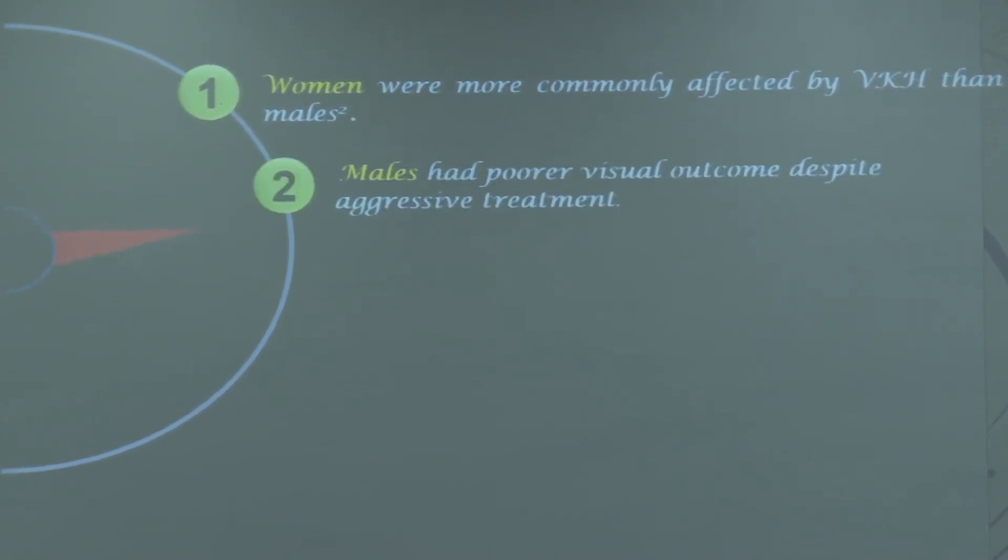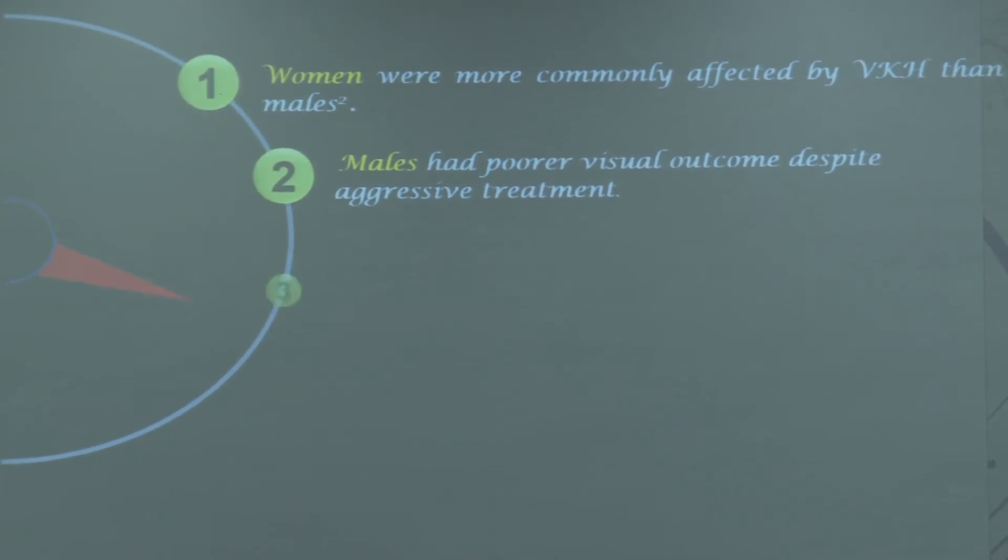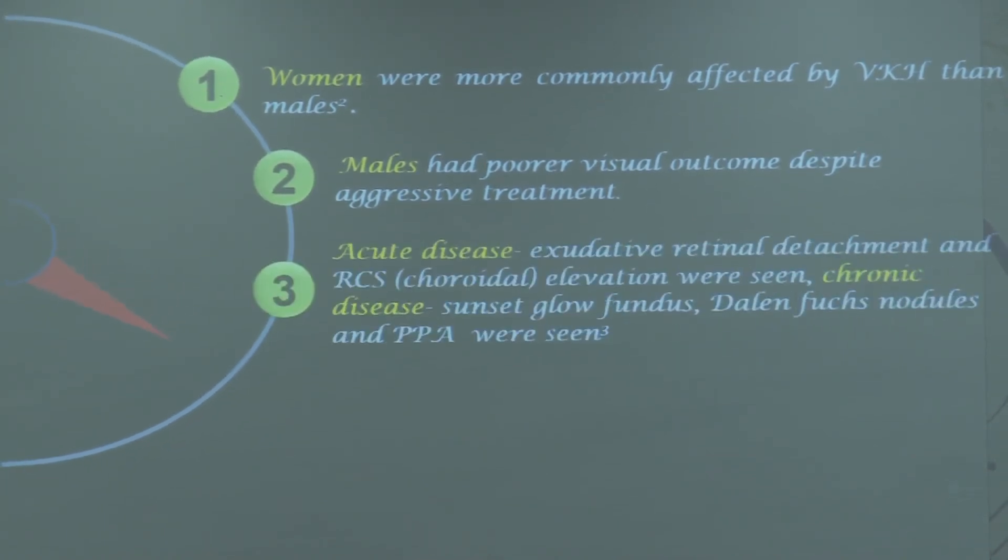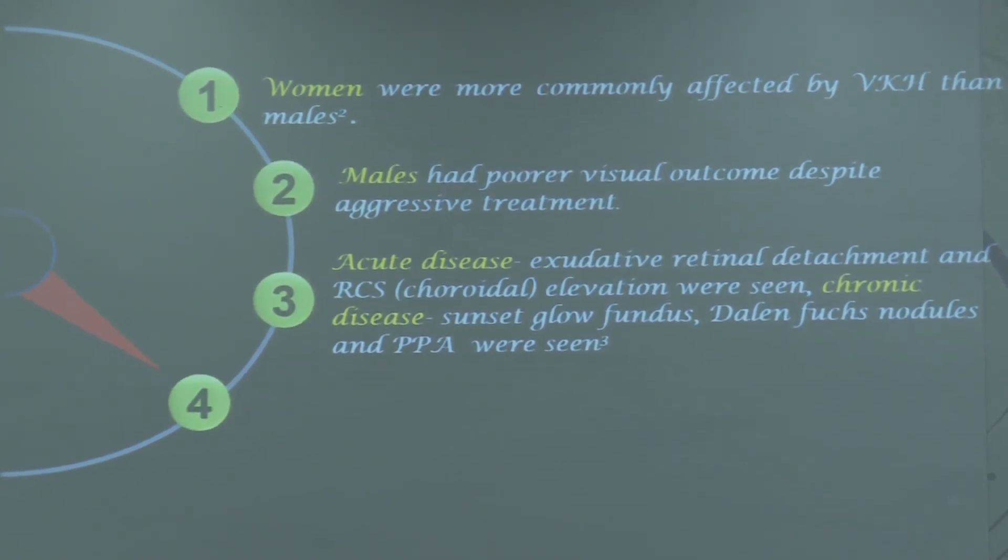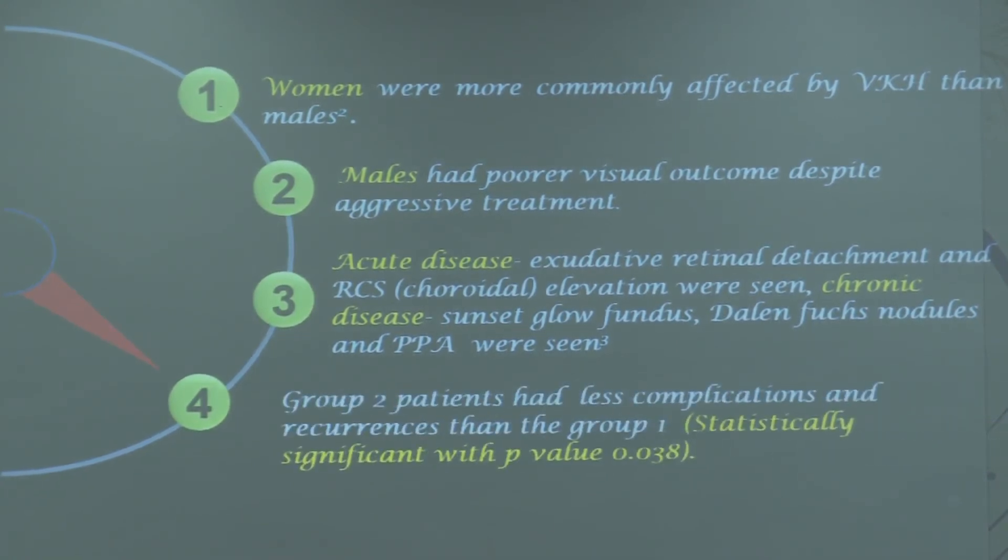Coming to the discussion part of our study, women were much more commonly affected by VKH than males. Males had poor visual outcomes despite aggressive treatment. In acute disease, exudative retinal detachment and choroidal elevation were seen, whereas in chronic disease, sunset glow fundus, Dalen-Fuchs nodules, and PPA were seen. Group 2 patients had less complications and recurrences than Group 1, which was statistically significant.